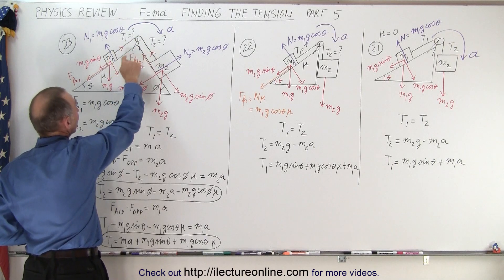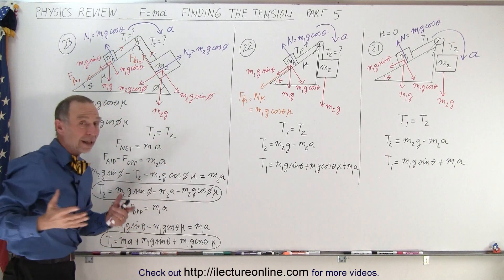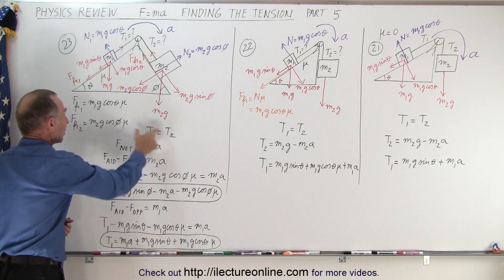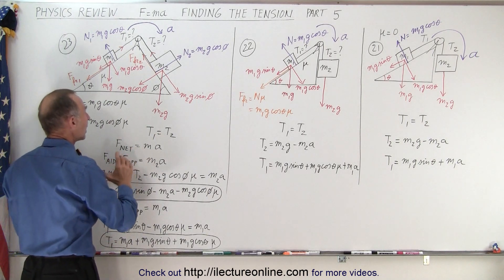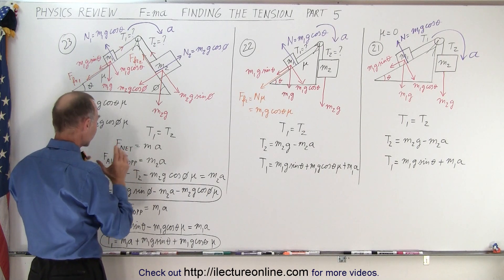T1 and T2 will be the same because the pulley is assumed to have no mass and no friction. So we can say that T1 equals T2. And we're going to use the concept that the net force equals MA and look at each drawing separately.